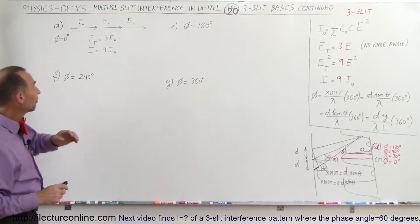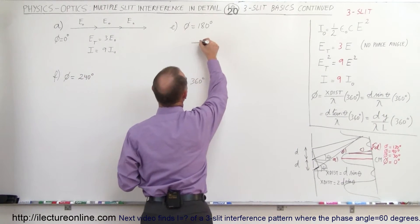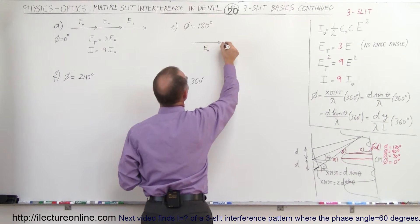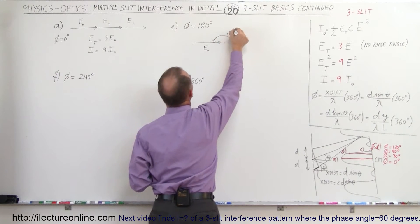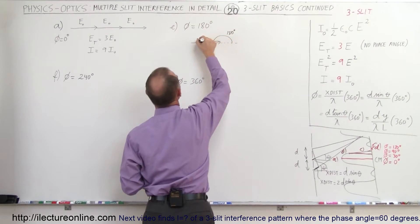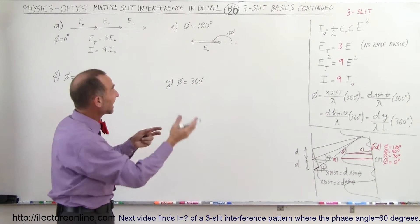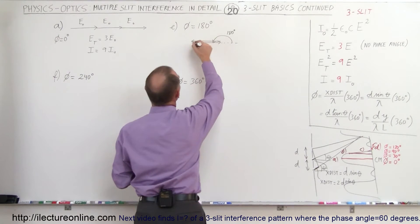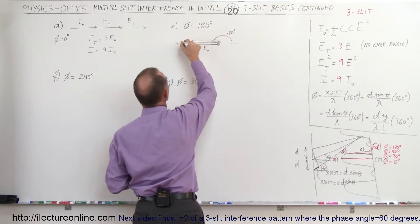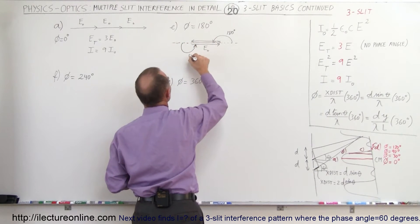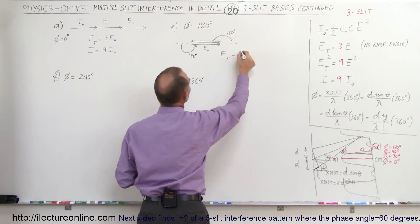What happens when the phase difference is 180 degrees? The first ray will go in this direction — that's E sub not. A 180 degree phase angle means the next ray from the second slit goes in the opposite direction, cancelling the first one. Then the third ray shifts another 180 degrees, going back in the original direction — that's another E sub not.